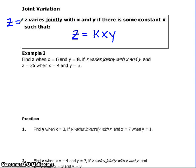Example 3. Find Z when X equals 6 and Y equals 8 if Z varies jointly with X and Y, and Z equals 36 when X equals 4 and Y equals 3.